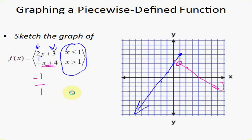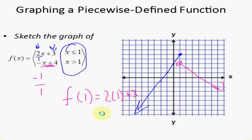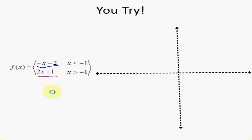What does f(1) equal? Because x = 1 is within the domain of the first function (x ≤ 1), I use that function. So f(1) = 2(1) + 3 = 5. You can see it on the graph: at x = 1, y = 5. It does not equal 3 because 1 is not within the domain of the second function, so we do not use that function.